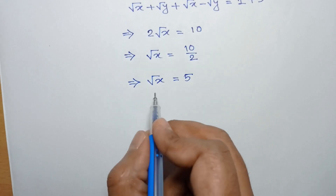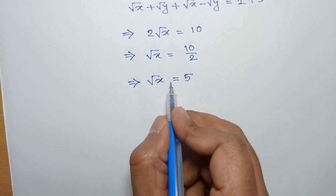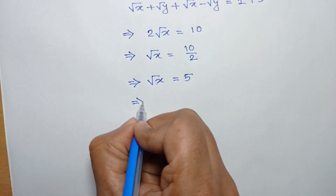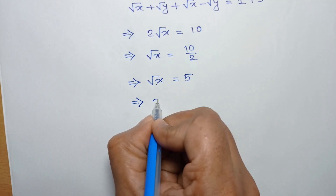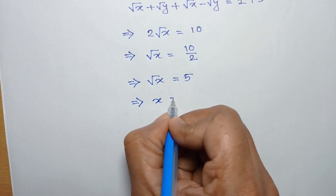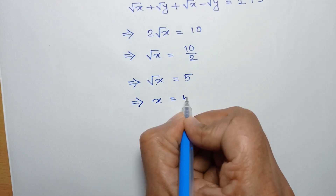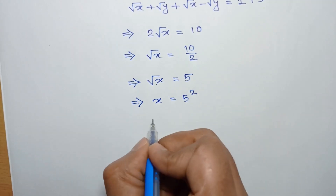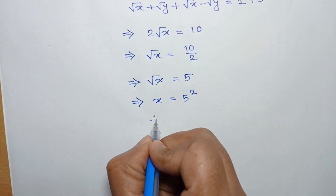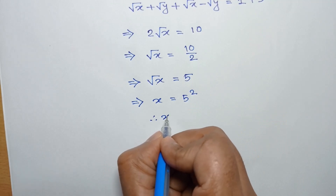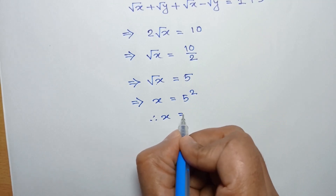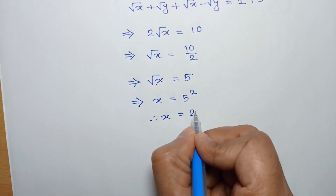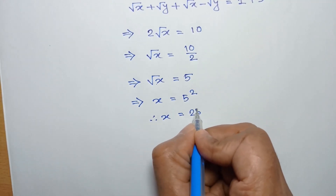Taking the square of both sides, we get x is equal to 5 squared. So the value of x is equal to 25.